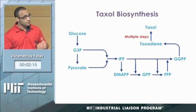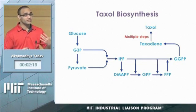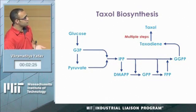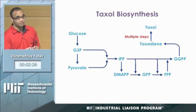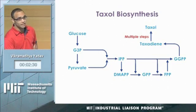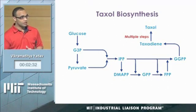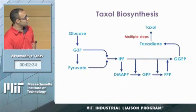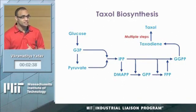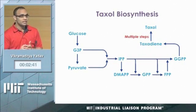When I started my research, this was what was known to us and it had been demonstrated — titers achieved were one gram per liter. I go into my advisor's office and he says the task for your PhD, for you to graduate, is very simple: you have to take taxadiene all the way up to taxol. All that was known at the time was that there are multiple steps — find out all the genes, express them, and hopefully produce taxol and graduate.